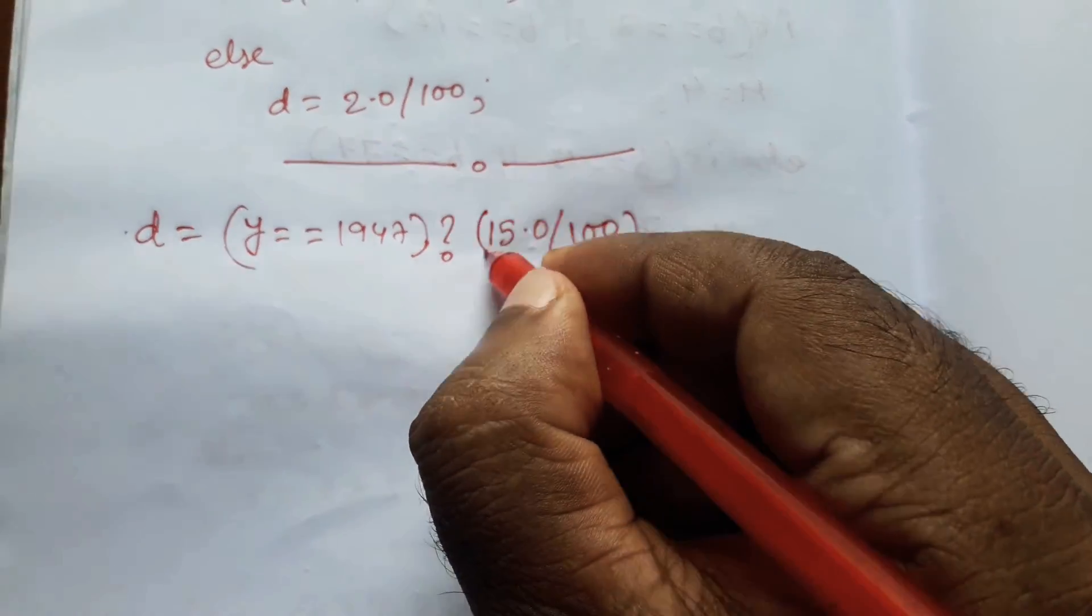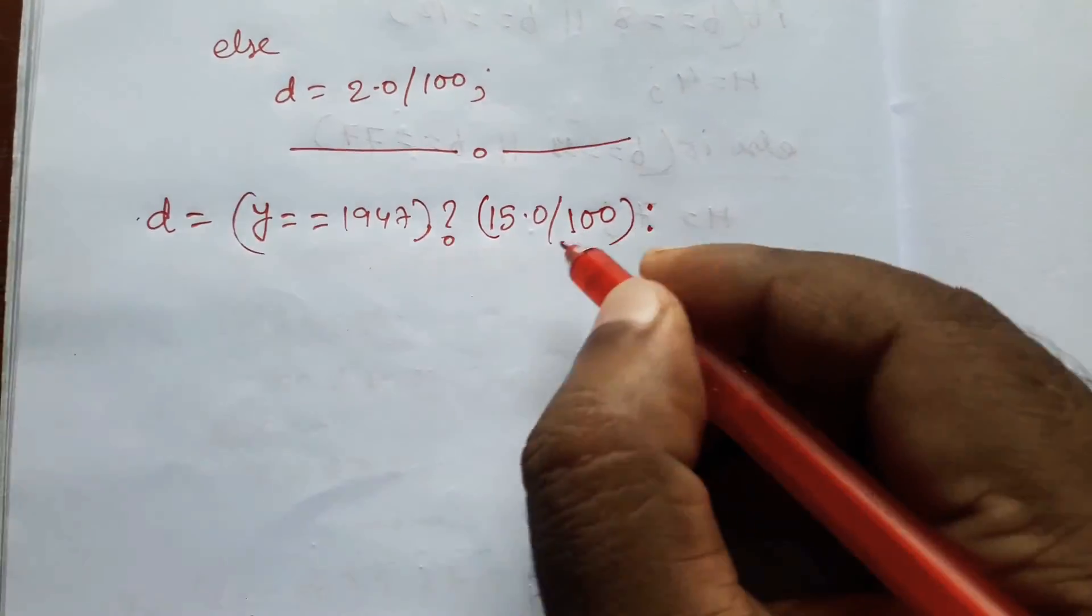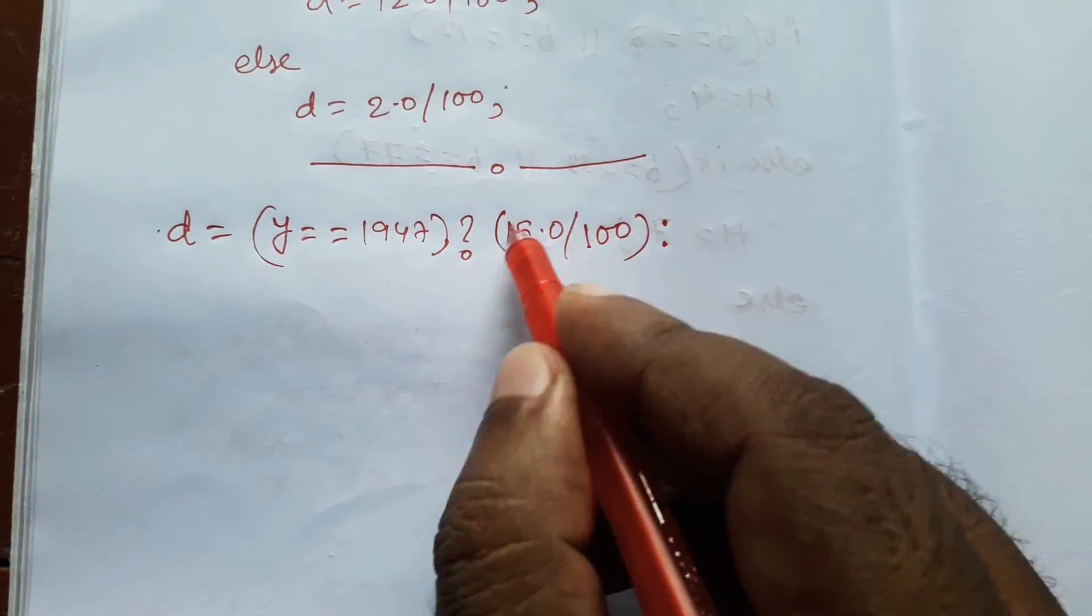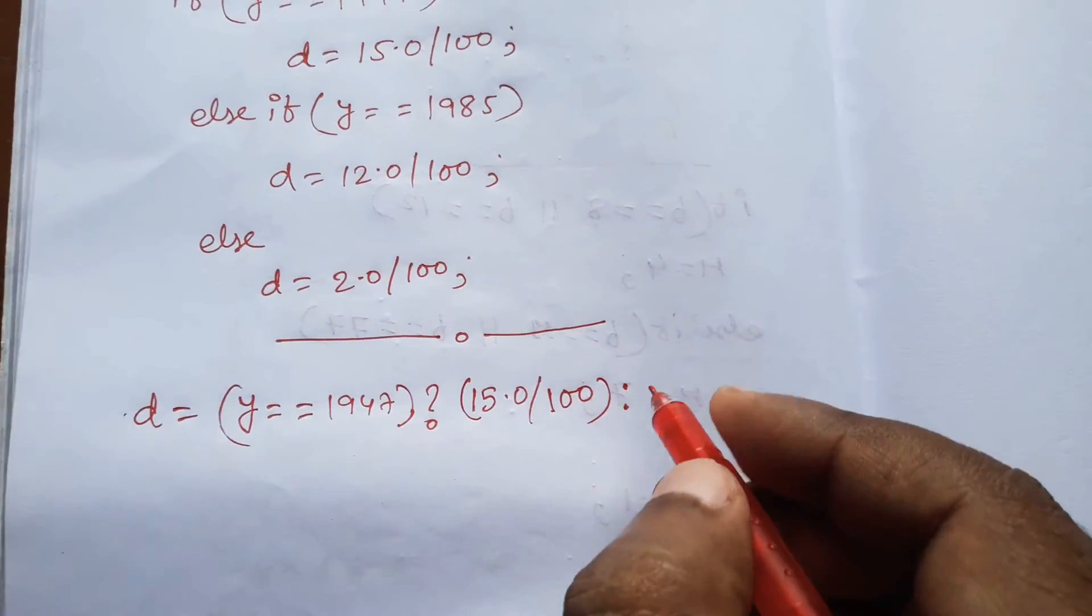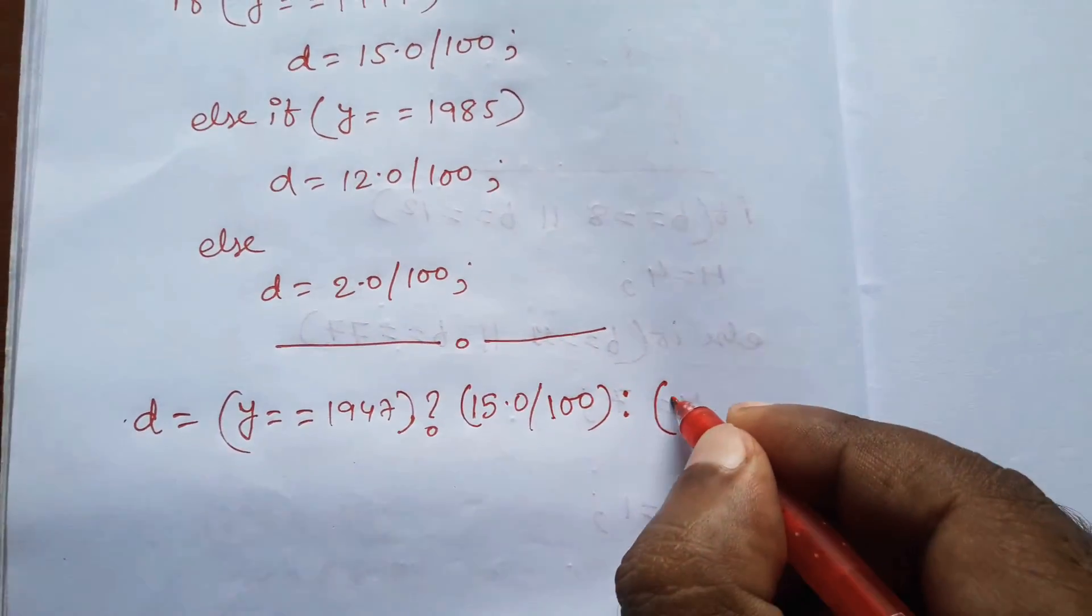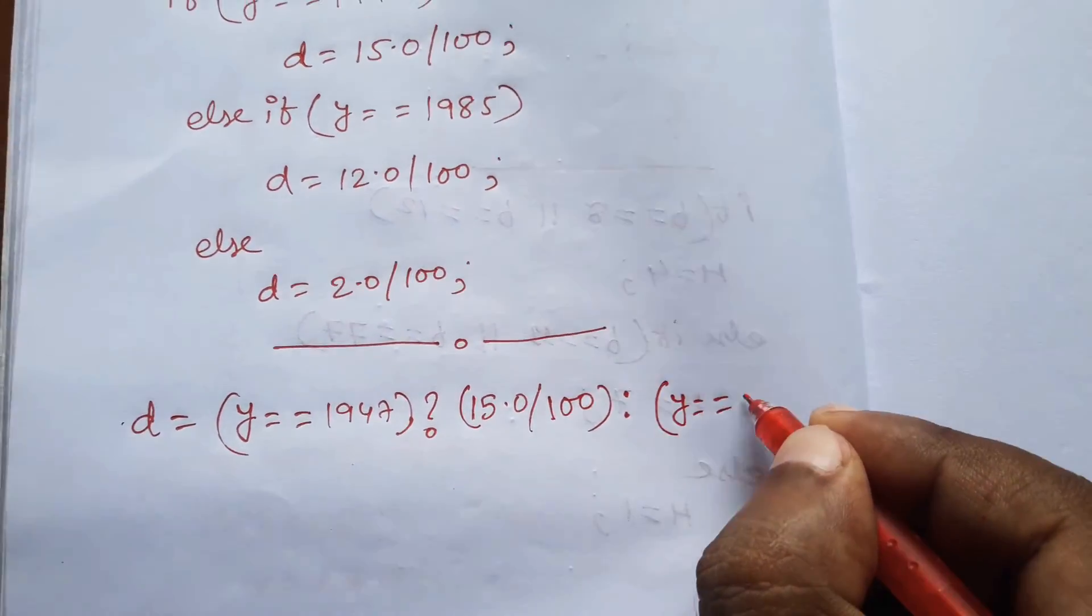We keep this inside a bracket, then colon. If it is true it will execute, but if it is false then we have the if-else part. So here we write again y equals equals to 1985.